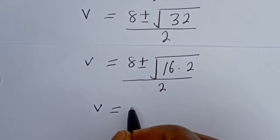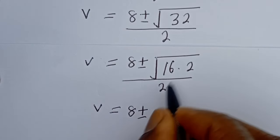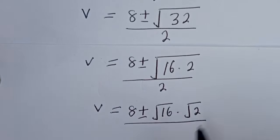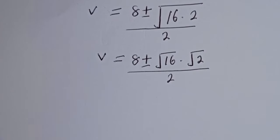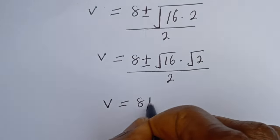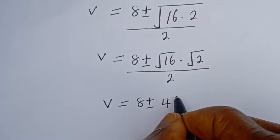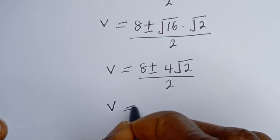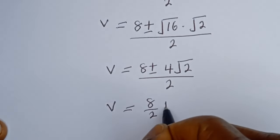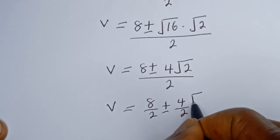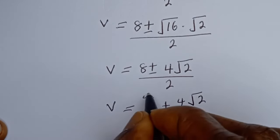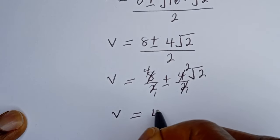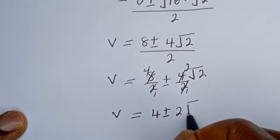So v equals 8 plus or minus square root of 16 multiplied by square root of 2, all over 2. Then v equals 8 plus or minus 4 root 2, over 2. Simplifying: 8 over 2 plus or minus 4 over 2 times root 2, giving v equals 4 plus or minus 2 root 2.